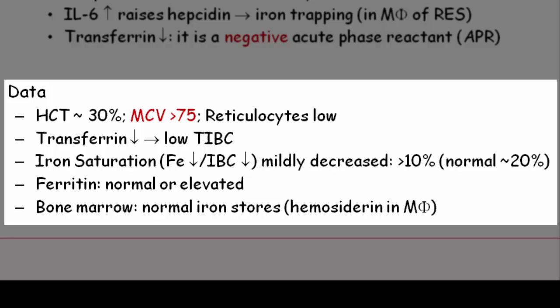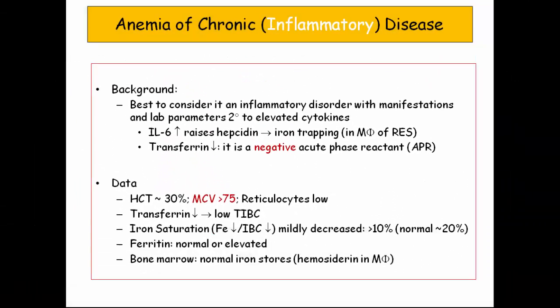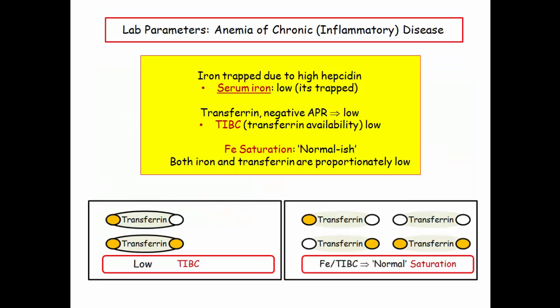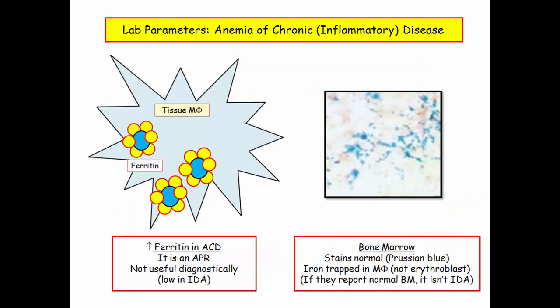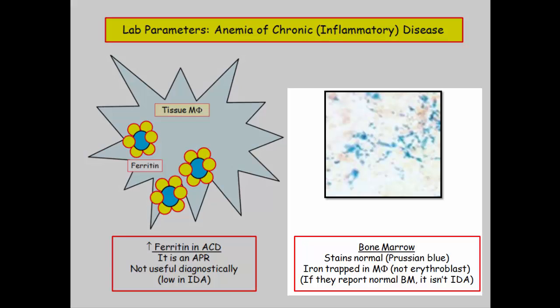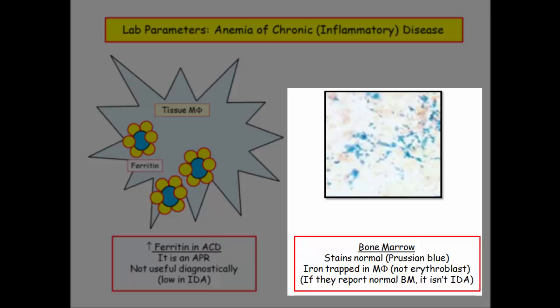Iron is trapped inside the cells, so we have low iron but also reduced trolleys. Ferritin, which is low in iron deficiency anemia, is normal or elevated in this inflammatory disorder — ferritin is an acute phase reactant. The bone marrow shows normal iron stores; hemosiderin is trapped in the bone marrow macrophages and stains positively. You have low iron because iron is trapped due to high hepcidin. Low transferrin because it is a negative acute phase reactant, so TIBC is low. Iron saturation is in the low-normal range, with both iron and transferrin proportionally low. Ferritin is normal or elevated — there is no shortage of iron, it just isn't being circulated.